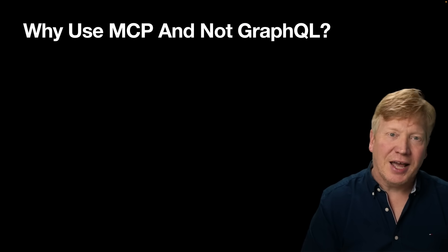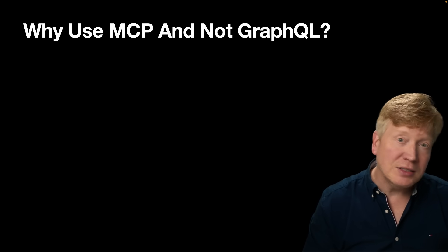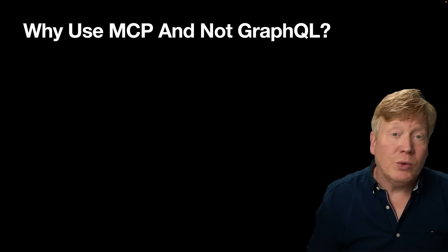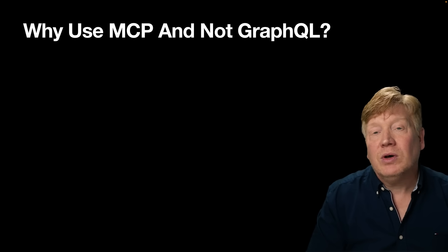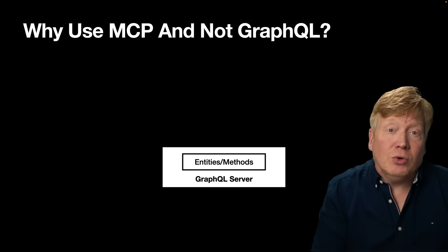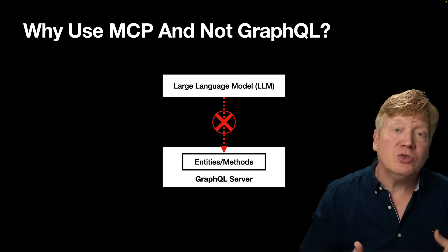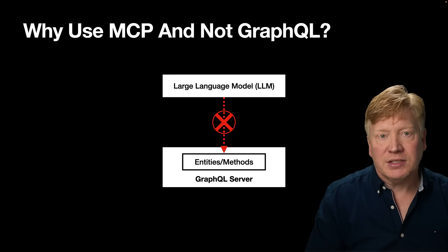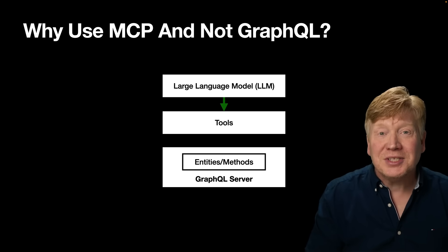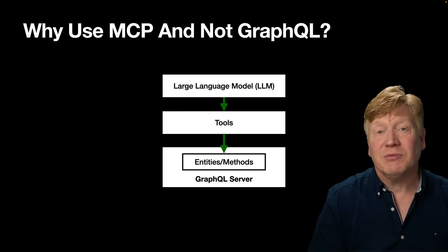The first question everyone asks is: why use MCP instead of a more generalized API standard like GraphQL? GraphQL does have reflection, though it can be turned off, and it's a really well-defined protocol. But here's the key difference from the AI model's perspective: LLMs support tools. GraphQL doesn't have tools as a primitive — it has entities and fields but no direct remote procedure call mechanism akin to tools. So if you want to connect an LLM to a GraphQL API, you have to create tools that query those entities and fields and give them to the model. MCP is just a standardized mechanism for doing that.